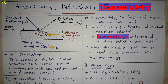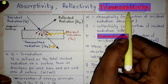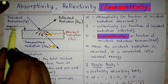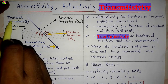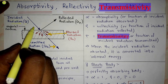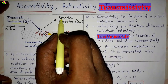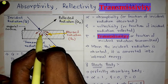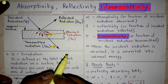Hi students, welcome. In this video we are going to study about absorptivity, reflectivity, and transmittivity. Here is a diagram showing a material surface on which we have applied incident radiation G. When this incident radiation is applied on the material surface, part of it gets reflected, part of it gets absorbed, and part of it gets transmitted through the material surface.